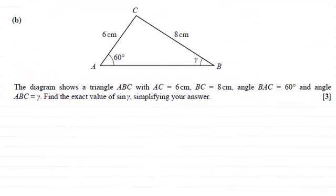Hi there. Now in this question we're given this diagram which shows a triangle ABC with AC being six centimeters, BC being eight centimeters, angle BAC being 60 degrees, and angle ABC being gamma. Find the exact value of sine gamma simplifying your answer.